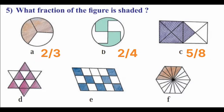Third one, 1, 2, 3, 4, 5, 6, 7, 8 parts, 5 are shaded. So 5 by 8. D, 7 parts are shaded out of 12. So 7 by 12.